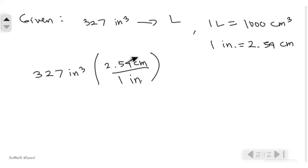Since it is cubic, we raise this to the power of 3, and we can now cancel out the inches. We're left with cubic centimeters. To solve for liters, we use the other conversion factor: 1 liter equals 1000 cubic centimeters. We can now cancel out the cubic centimeters, leaving us with liters, which is what we're asked to solve for.